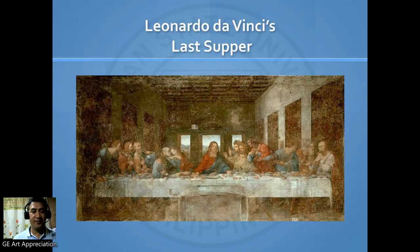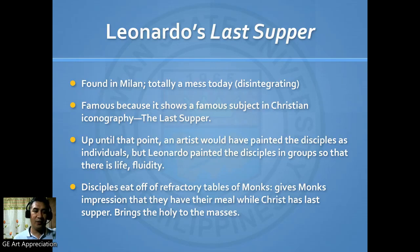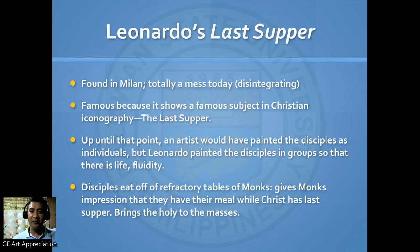This is Leonardo da Vinci's Last Supper. It is found in Milan. As of today, it is totally deteriorated — its forms have become disintegrated. It is famous because it shows a famous subject in Christian iconography. Up until that point, an artist would have painted the disciples as individuals, but Leonardo painted the disciples in groups so that there is life and fluidity. Here we also have Leonardo's Mona Lisa, from 1503 to 1506.